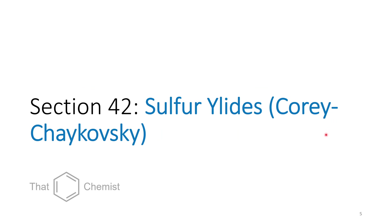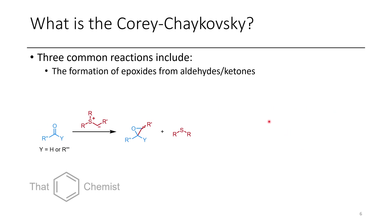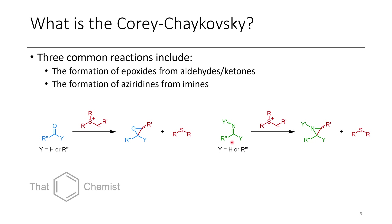Now let's get to today's material: sulfur ylids and the Corey-Chaykovsky reaction. Most of the time when you hear this reaction, you'll probably think of the formation of an epoxide from an aldehyde or a ketone using a sulfur ylid. This is probably the most common use, although there are other variants, such as treatment of imines with a sulfonium ylid, which forms an aziridine — aziridines are like epoxides, just with nitrogen instead of oxygen.